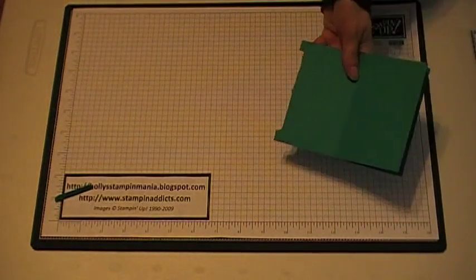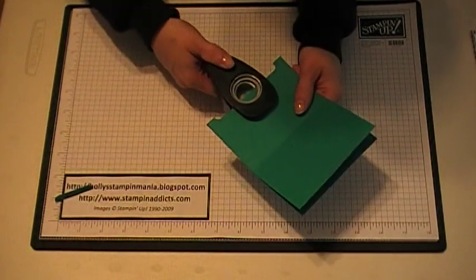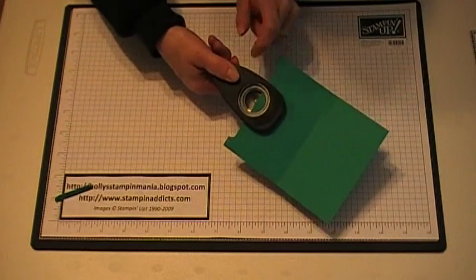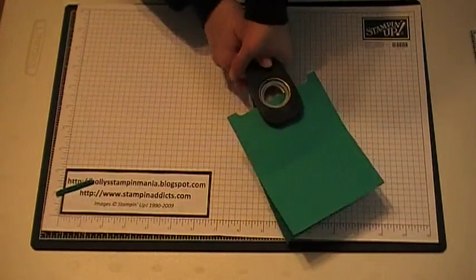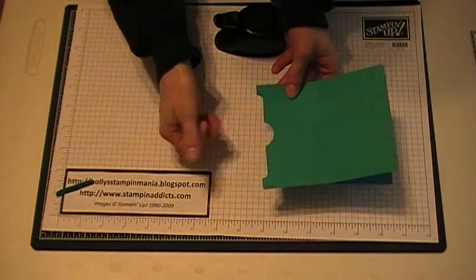Then you're going to take a one-inch circle punch. You can use any size circle punch you want. I chose the one-inch punch, and you're going to go about halfway in like that and punch that out. That's so they can get a hold of the gift card and pull it out.